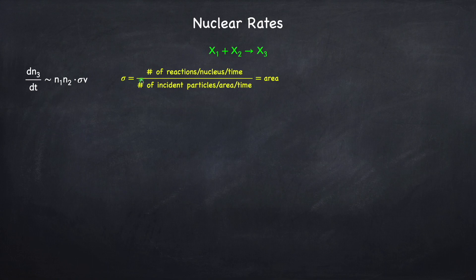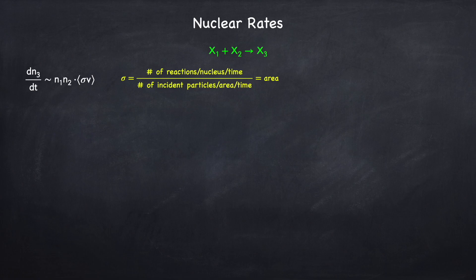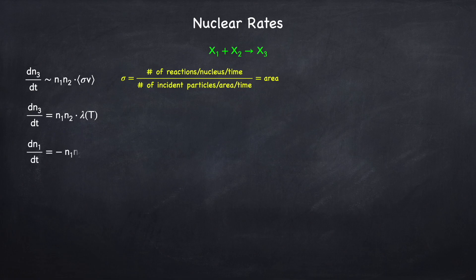You may be wondering which velocity we use, because in a gas of particles there's a whole distribution of velocities. The answer is you have to add up all the different velocities in this distribution. So really what you have is not the cross-section times the velocity, but the average of the cross-section times the velocity. I'm going to rewrite this equation as n1 times n2 times some rate lambda, which in general depends on temperature. Now since species X3 is created by the fusion of X1 and X2, the rate of change of X1 and X2 is the negative of the rate of change of X3 — because every time I create X3, I destroy an X1 and an X2.